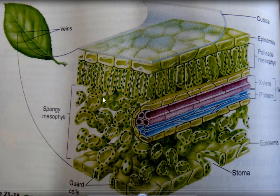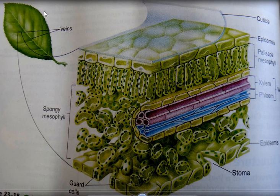How can we recognize a vascular plant? The presence of veins. The veins are these pipe-like structures that are able to transport water and minerals into the leaf. And the leaf is the main organ for photosynthesis.